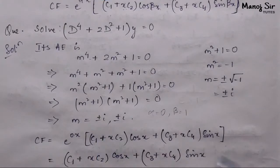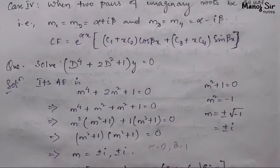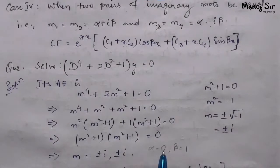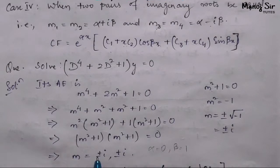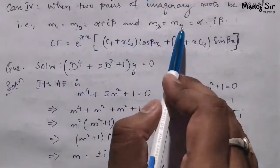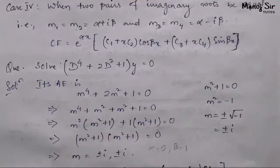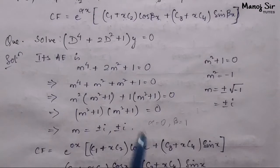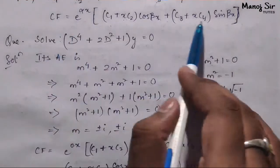Comparing these roots with m1, m2, m3, m4 from the Case 4 formula, we get alpha equals zero and beta equals one.